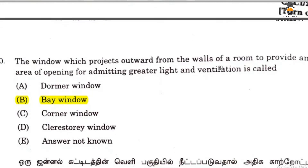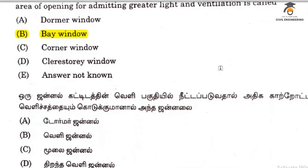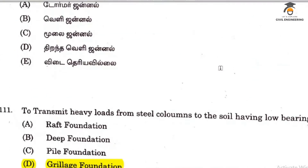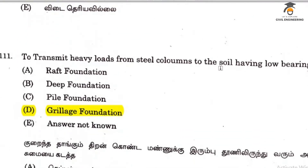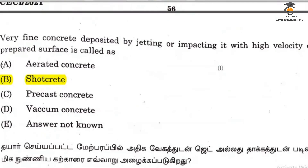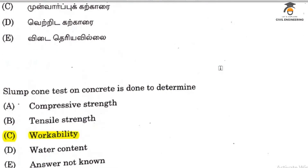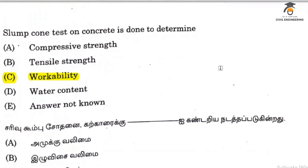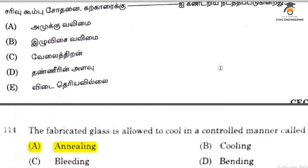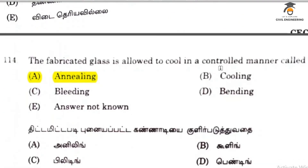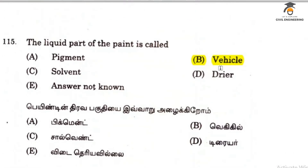A bay window projects outward at the outer level. Heavy load transfer is done using a grillage foundation. Very fine concrete is called shotcrete. Slump test measures workability. Question 114 relates to annealing and question 115 to vehicle.